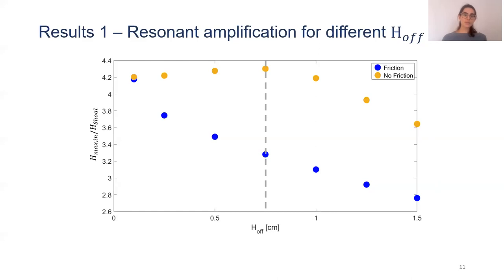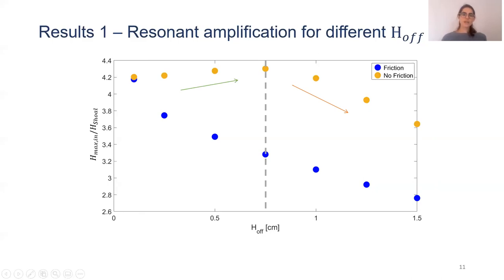The first pattern: before a certain offshore wave height, you have an increase of wave amplification while increasing the offshore wave height. Then after this wave height, you have a decrease of wave amplification when increasing the offshore wave height, which is a similar behavior as the one we found in the model with friction. So it seems that friction plays a role, of course, but another process must also be playing a role that is determining how these waves are amplifying.